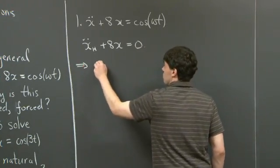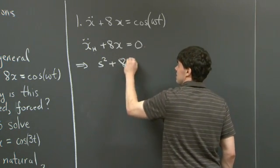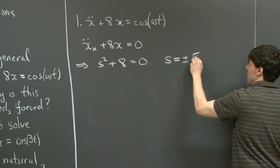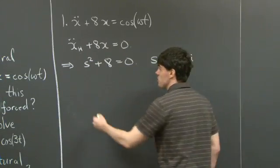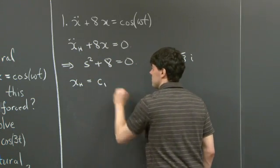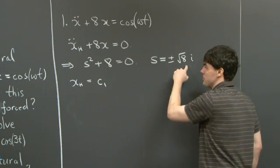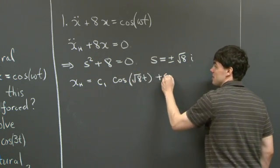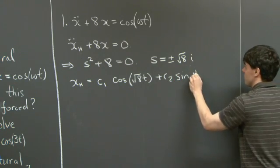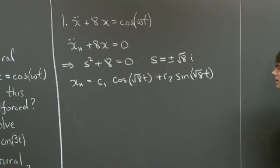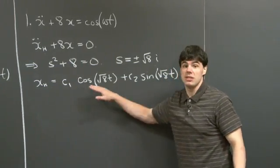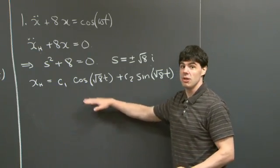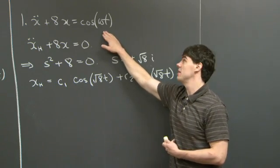The characteristic polynomial is s² + 8 = 0, which gives us roots of ±√8·i. So the homogeneous solution is C₁cos(√8·t) + C₂sin(√8·t), since we have purely imaginary roots. The homogeneous solution always contains two constants. The general solution, however, is the homogeneous solution plus one particular solution that solves x'' + 8x = cos(ωt).